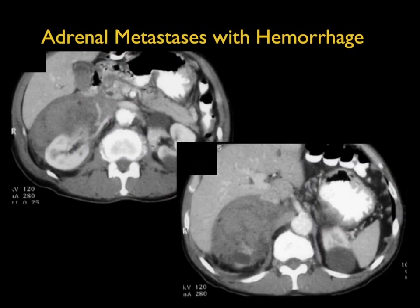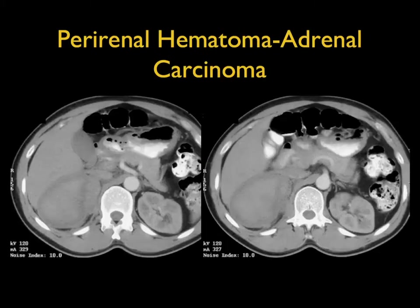Occasionally, metastasis — mainly lung cancer — can cause hemorrhage. The patient presents with right upper quadrant pain and a large bleed. You lose the adrenal gland and you also lose the mass — you can't tell where it begins and ends. When you see hemorrhage like this, you have to think about an underlying mass. In another case with flank pain, the patient had a primary adrenal carcinoma, which is quite rare.